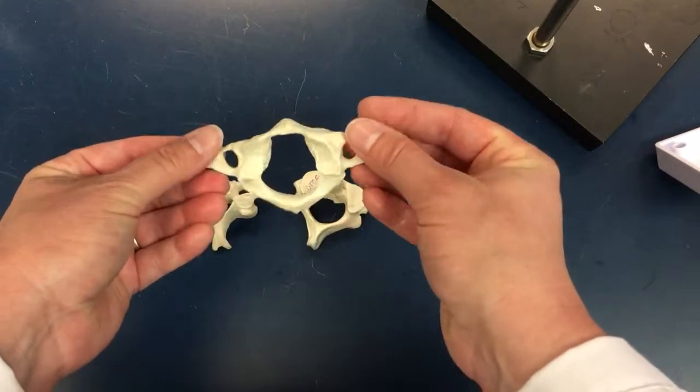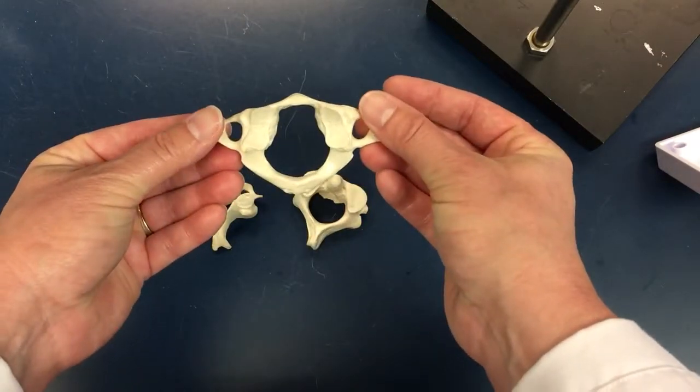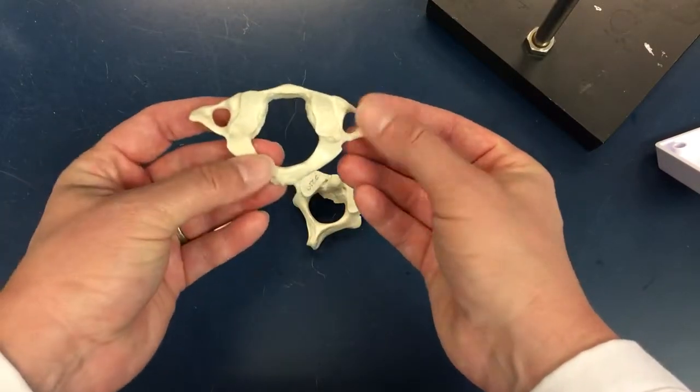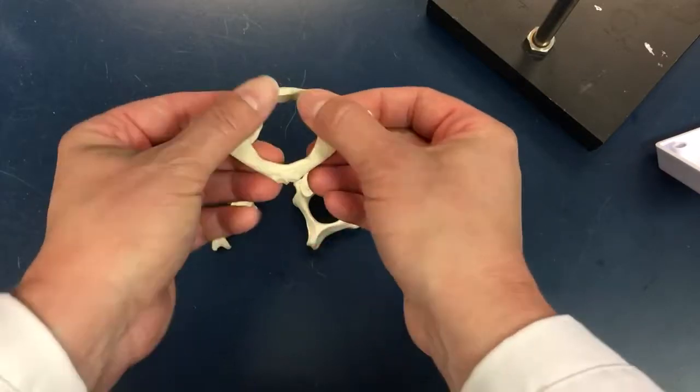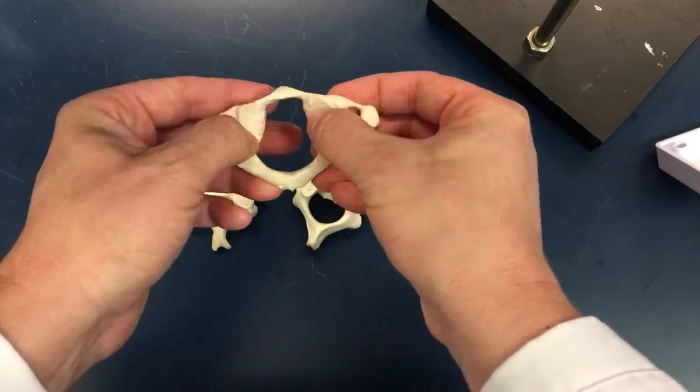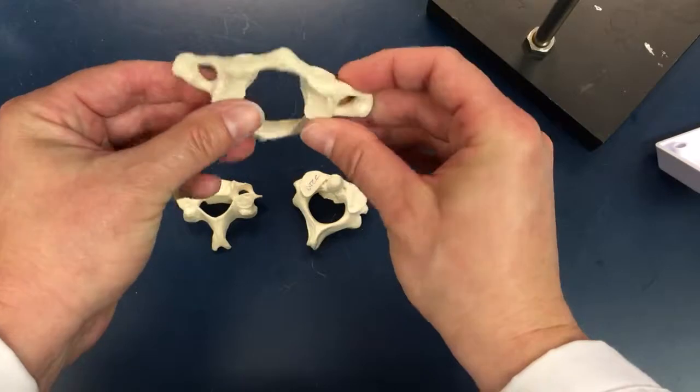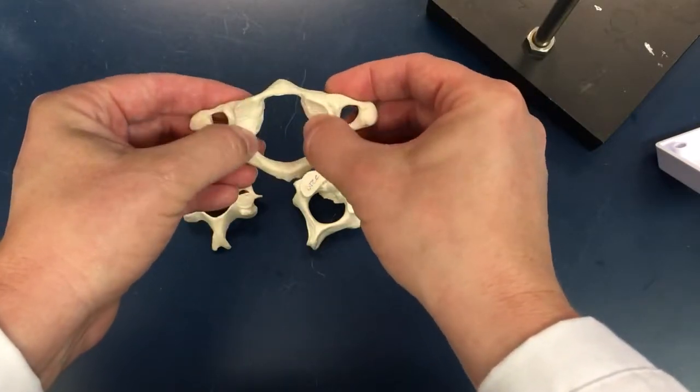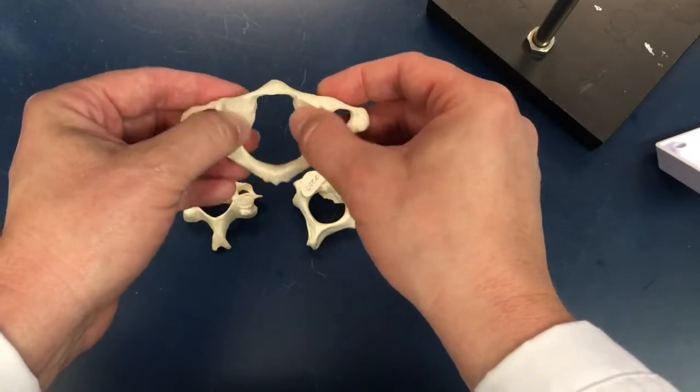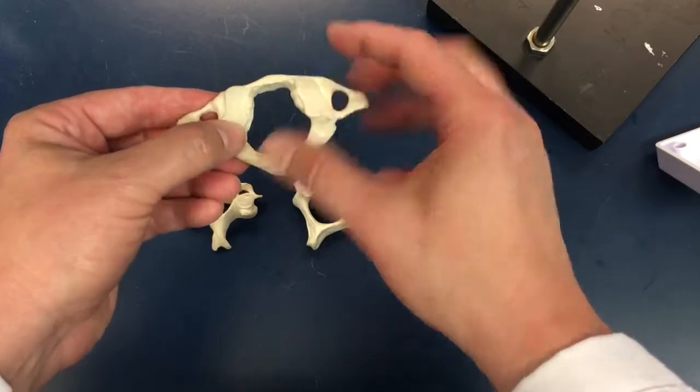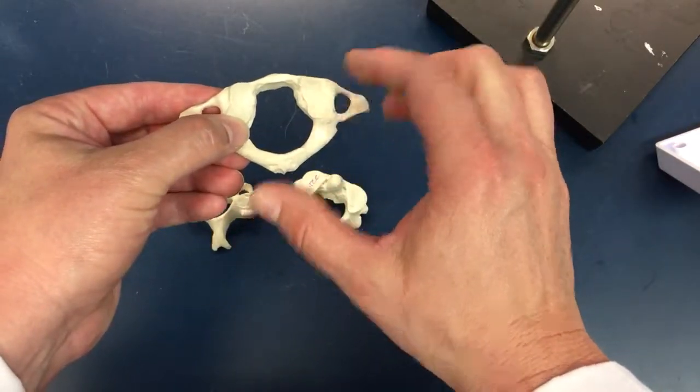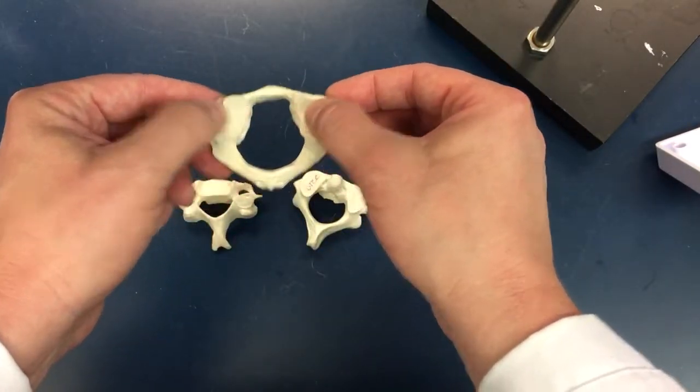This is the C1 atlas. It has transverse foramen, and then these smooth areas here—this area is referred to as the occipital facets. The occipital facets articulate with the occipital condyles on the occipital bone on the skull.